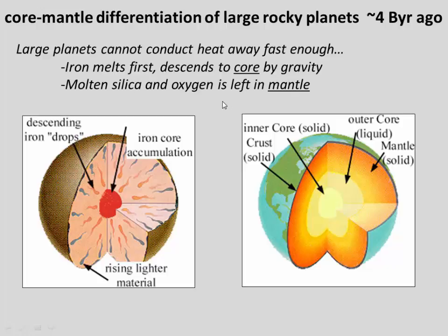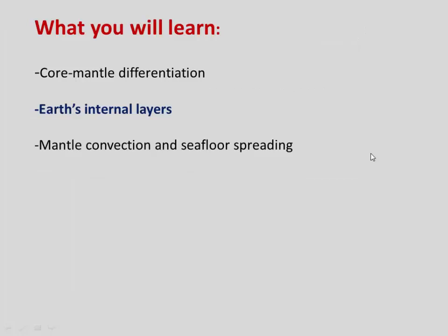This differentiation event means that Earth today is not homogeneous — the different layers have different compositions. Specifically, the core of Earth is mostly iron and nickel, and outside of that is Earth's mantle, which is mostly made of silica and oxygen. And then we have Earth's crust. Let's now look more closely at these layers now that we know how they were formed.